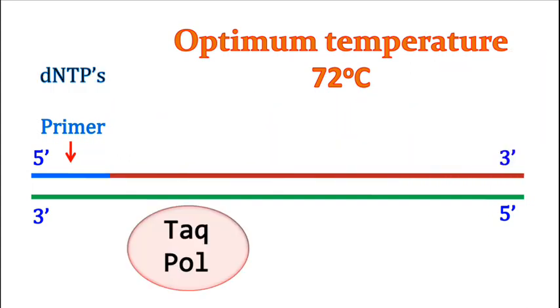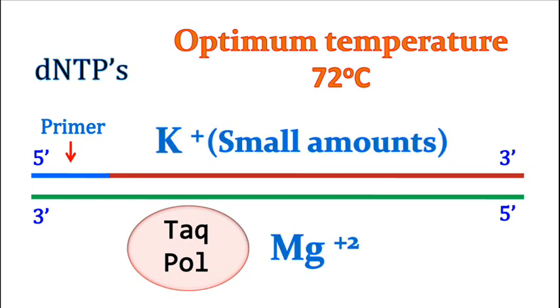This reaction occurs in presence of dNTPs, small amounts of potassium and magnesium ions.